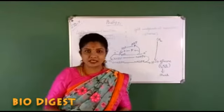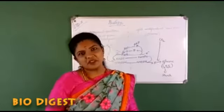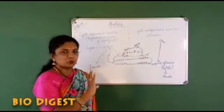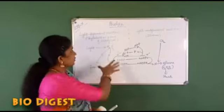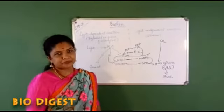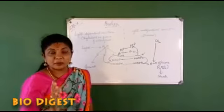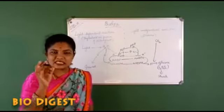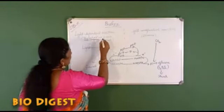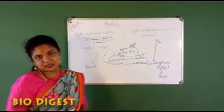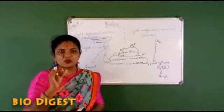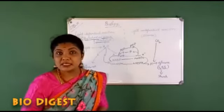We were dealing with photosynthesis. We completed the light reaction in the previous video. I have written the summary of both reactions of photosynthesis. On one side is the light-dependent reaction, otherwise called the light reaction, which takes place only in the presence of light. The light reaction takes place in the thylakoid or grana of the chloroplast.